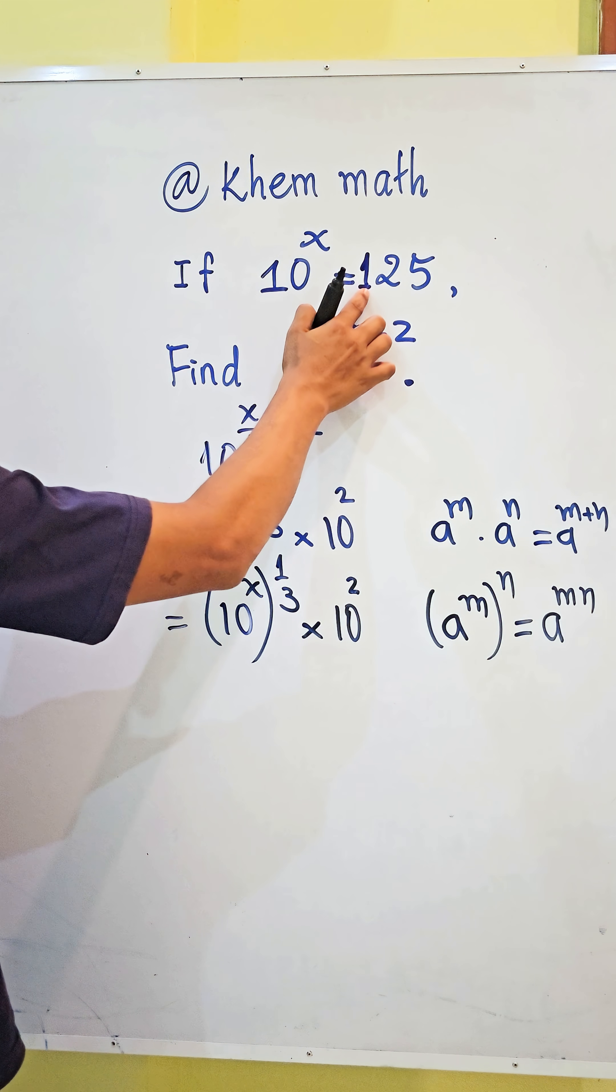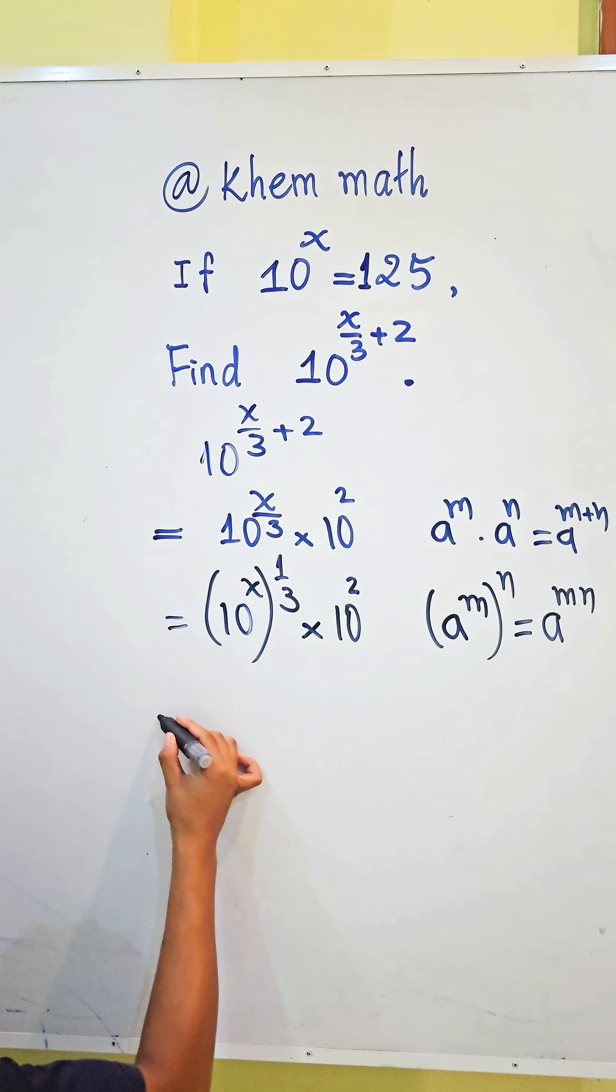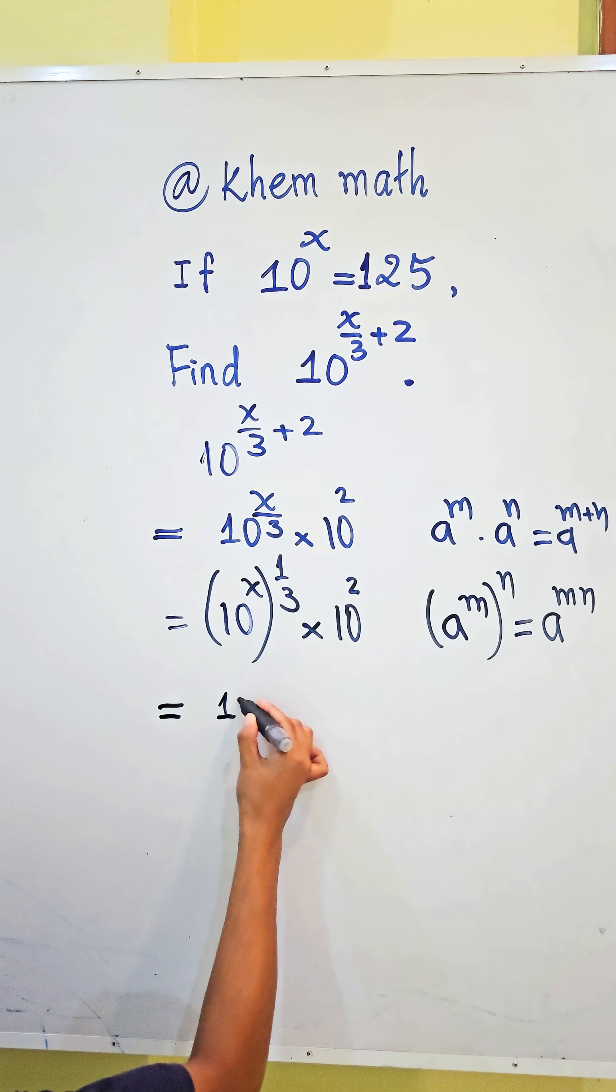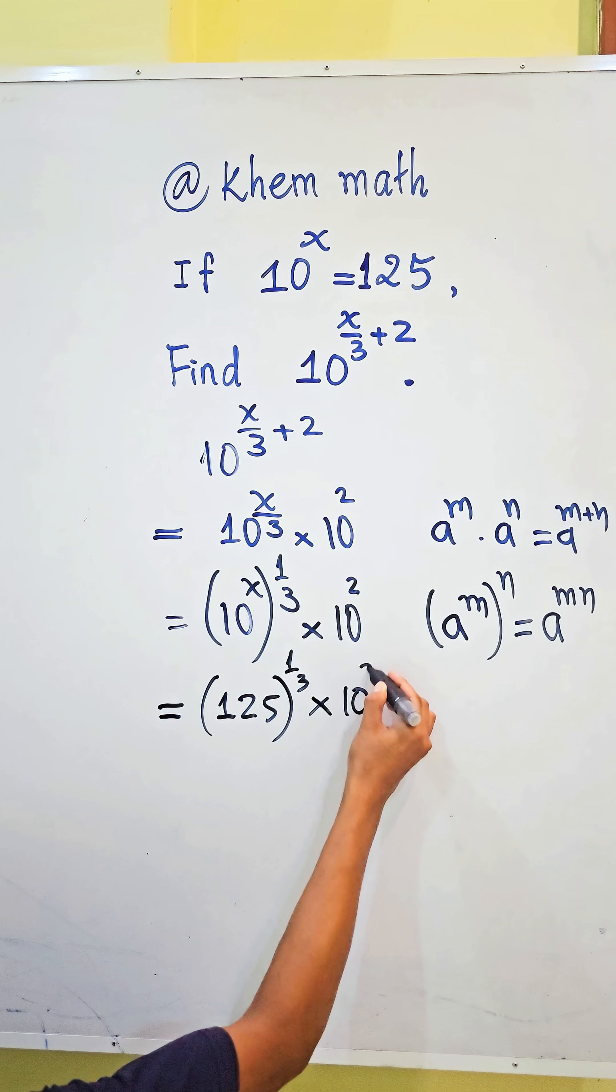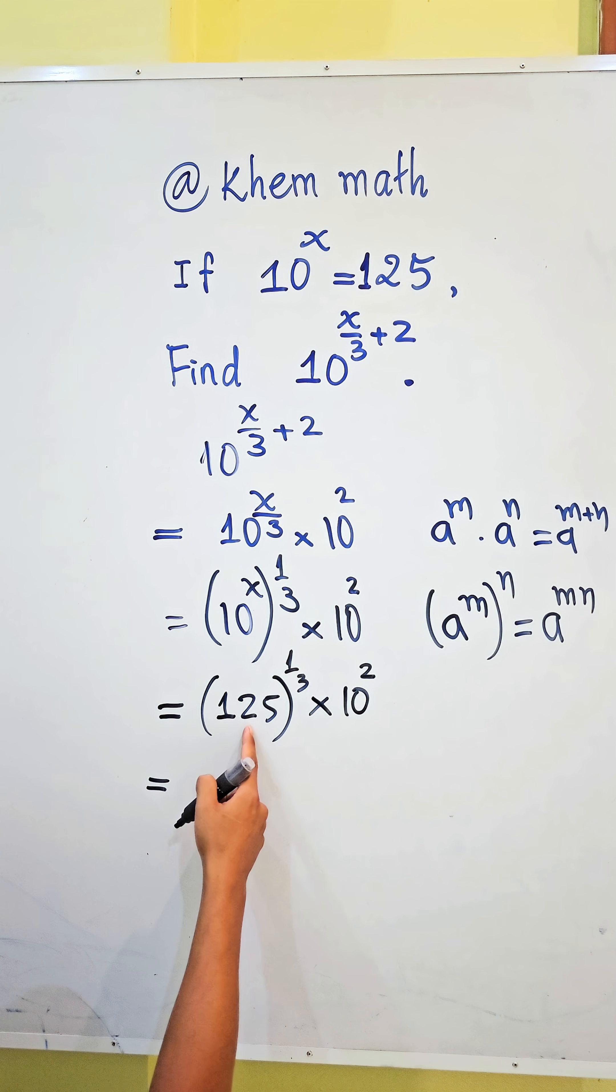We replace it by 125, so it's equal to 125 all power 1 divided by 3, times 10 squared.